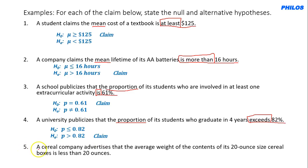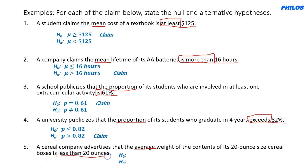Example 5: A cereal company advertises that the average weight of each 20-ounce box is less than 20 ounces. 'Average' is the same as mean (μ). 'Less than' is a statement of inequality assigned to the alternate hypothesis: Hₐ: μ < 20. The opposite of < is ≥, so H₀: μ ≥ 20. Remember, average equals mean, so we still use μ.